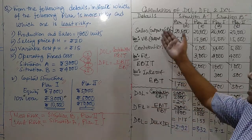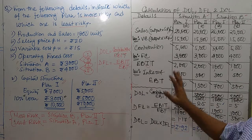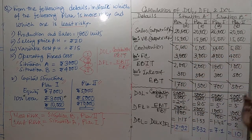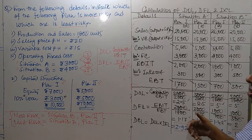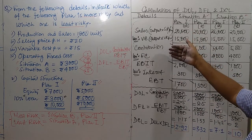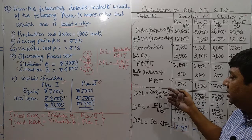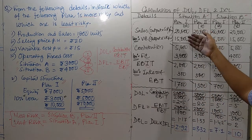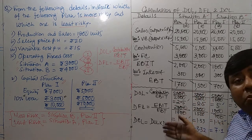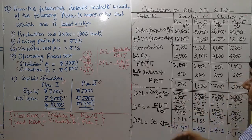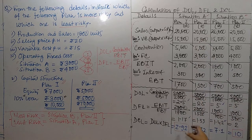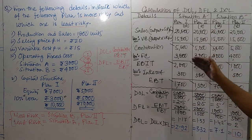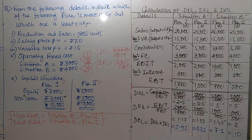The income statement includes: sales, variable cost, contribution, fixed cost, EBIT, interest, and EBT. Once complete, you calculate operating risk using contribution and EBIT, and financial leverage using EBIT and EBT — all of which are available in the columns. Just plot the figures according to the formula and the answer will automatically come. Thank you.